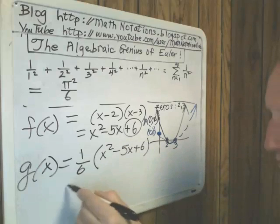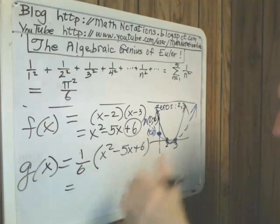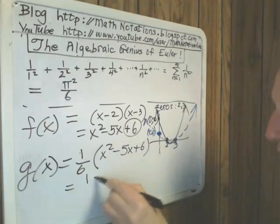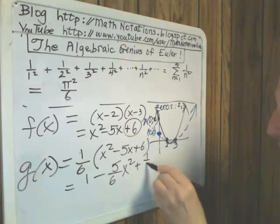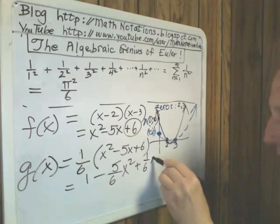And I could distribute that and write it backwards. So we get 1 minus 5 over 6 times x plus 1 over 6 times x squared.